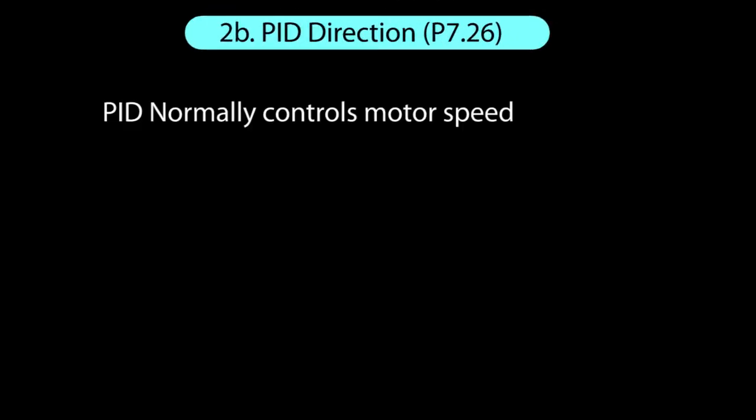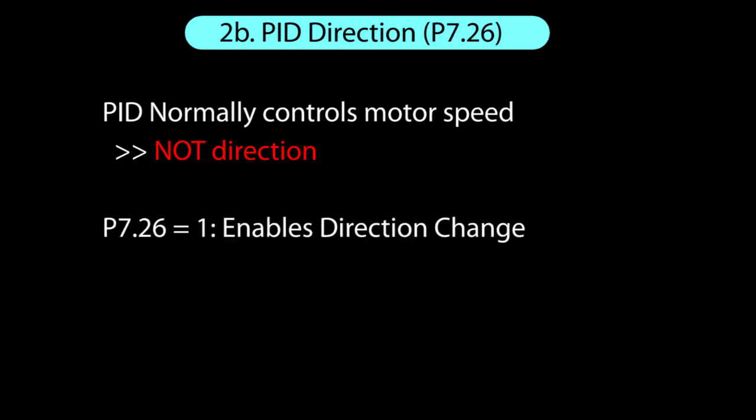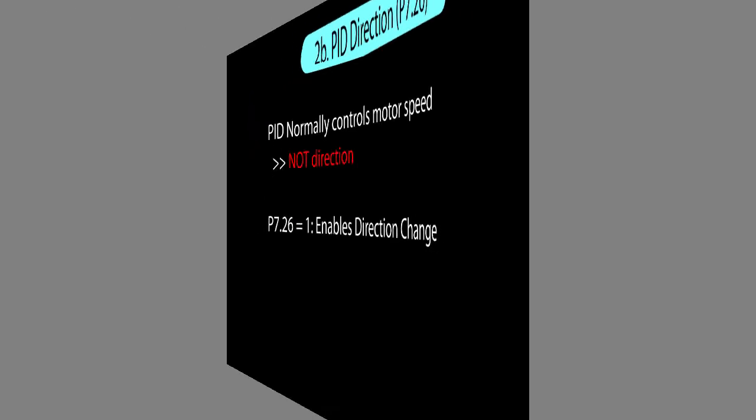Most of the time, you'll want PID to speed up or slow down the drive to compensate for load changes. It's rare that you'll want it to change the motor's direction. So this parameter limits the drive to only run the motor in one direction. That way if PID goes nuts, your system won't be inadvertently slammed into reverse, which could damage a lot of things. If you do need PID to control both directions, then change this to a 1.